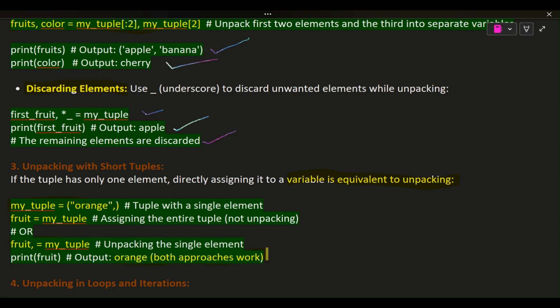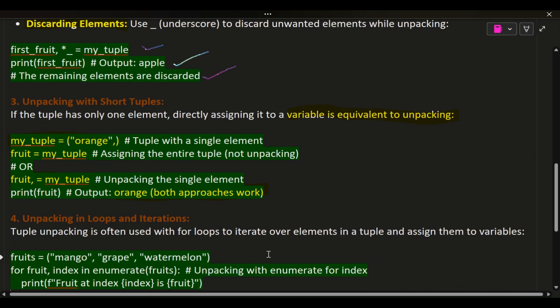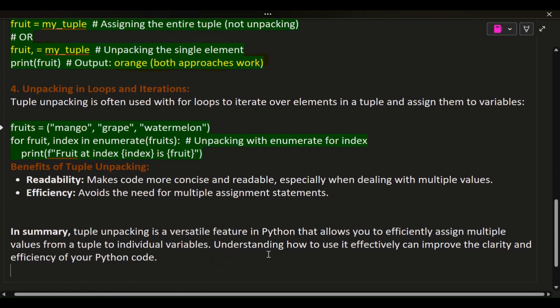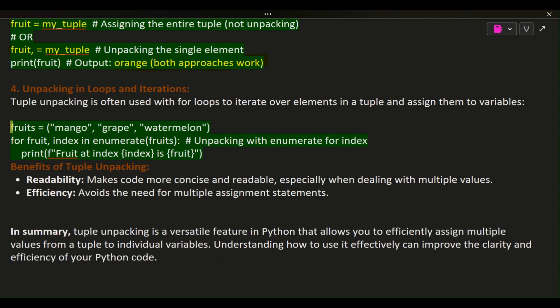4. Unpacking in Loops and Iterations: Tuple unpacking is often used with for loops to iterate over elements in a tuple and assign them to variables. fruits = ('mango', 'grape', 'watermelon')